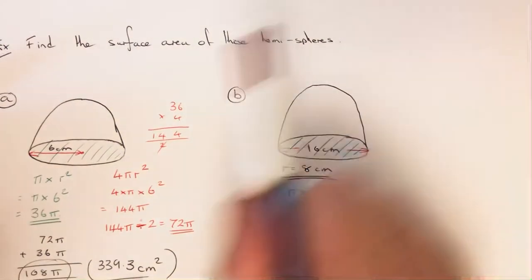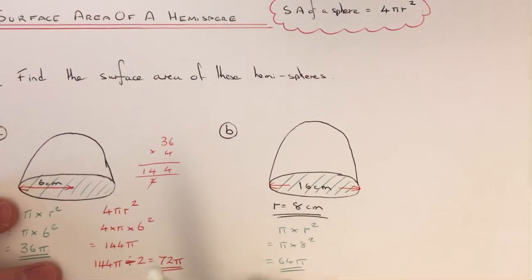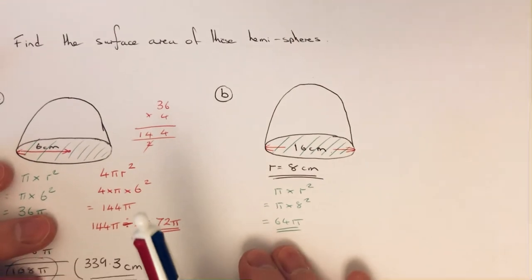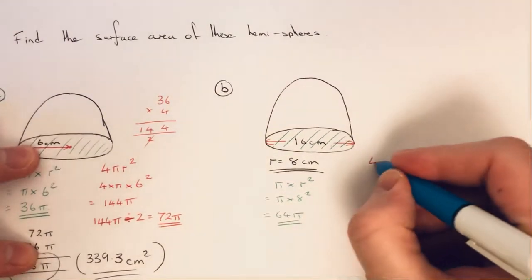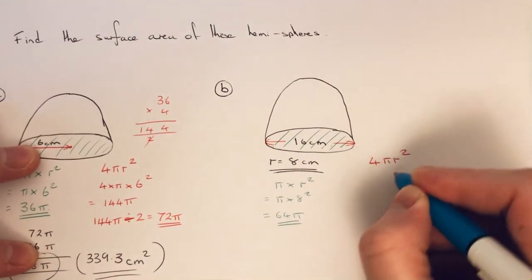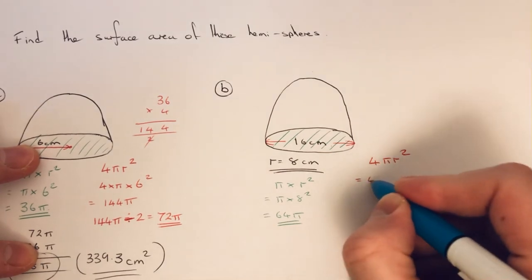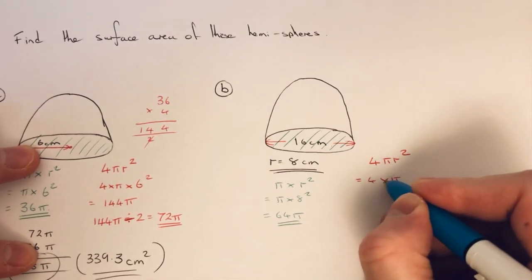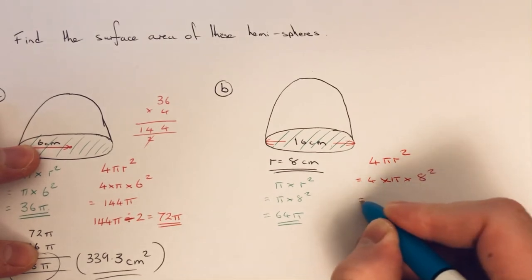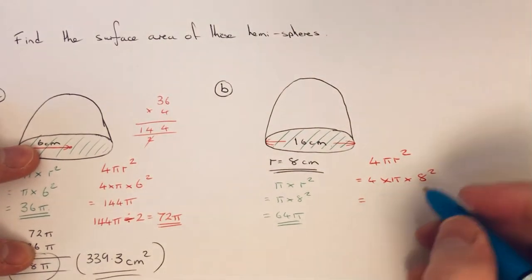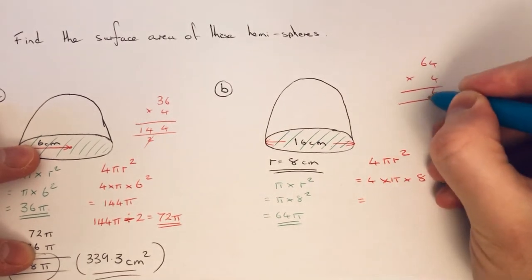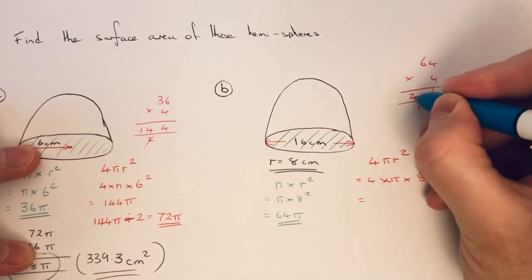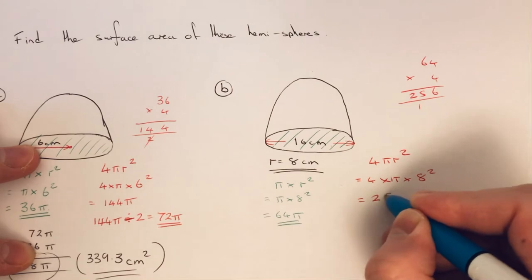So we then use 4πr² to work out the surface area of the curved surface. That would be 4 times π times 8². 8² is 64, and then we've got to do 64 times 4. So that's 256, so we get 256π.